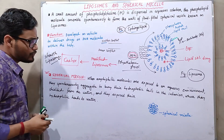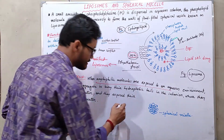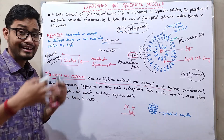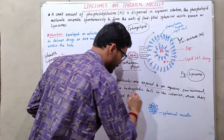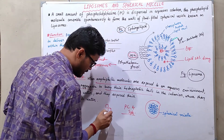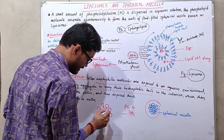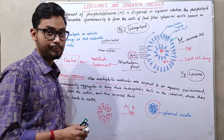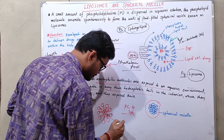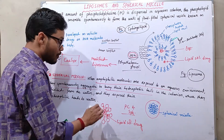Now let's discuss spherical micelles. When amphiphilic molecules — specifically phosphatidylcholine and sphingolipids — are exposed to an aqueous environment, they spontaneously aggregate to bury their hydrophobic tails. Unlike liposomes, they create a single-layered spherical vesicle, not a double membrane. This single spherical vesicle is known as a micelle, and micelles are also used to deliver drugs.